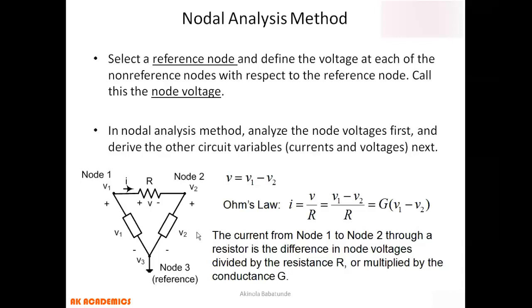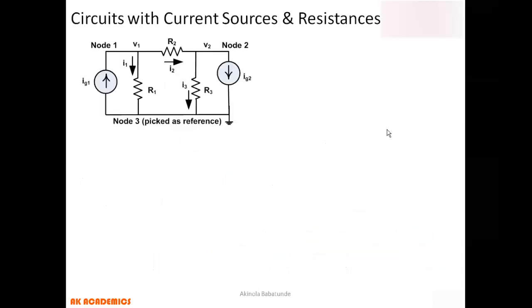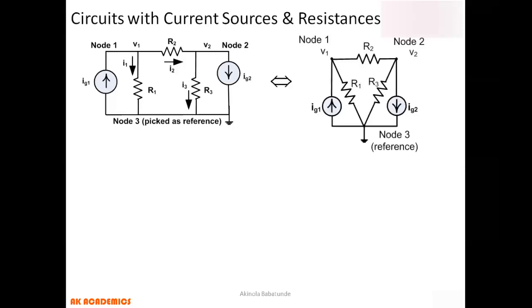The current i can be obtained as i = G(V1 - V2) or (V1 - V2)/R. Now, there are circuits that have current sources combined with resistances. In this example circuit, there are two current sources: ig1 and ig2. There is also a reference node. All conductors circled together here represent a single node — this is Node 3, which is our reference node. This is Node 1, and this is Node 2.